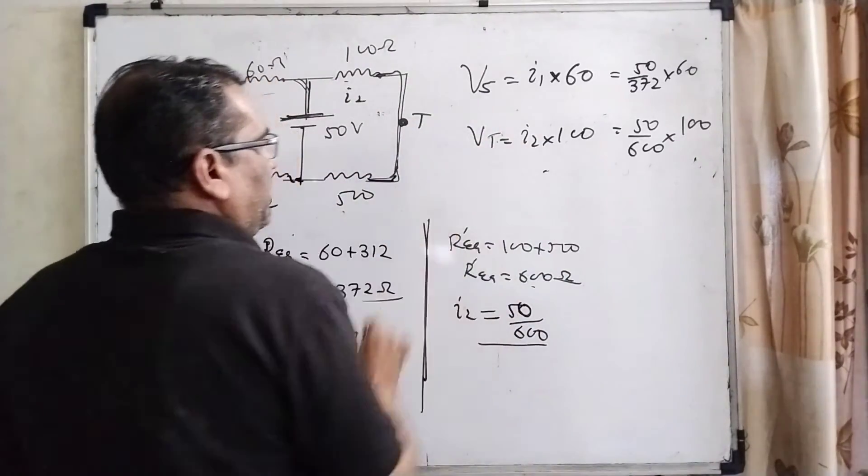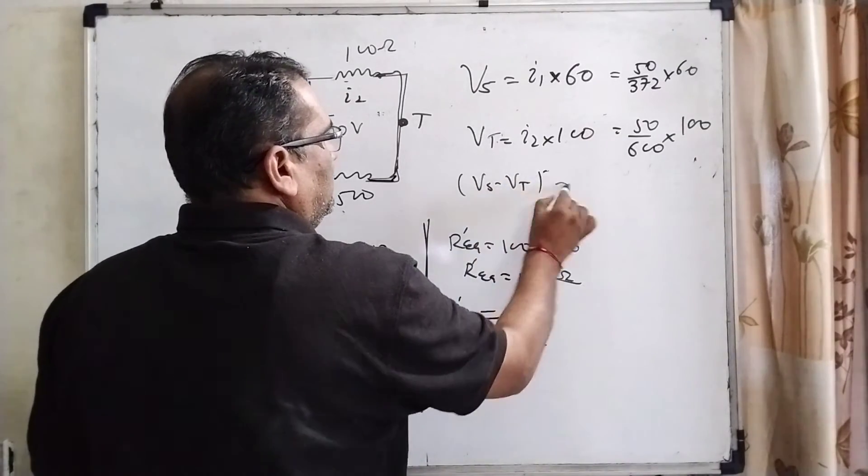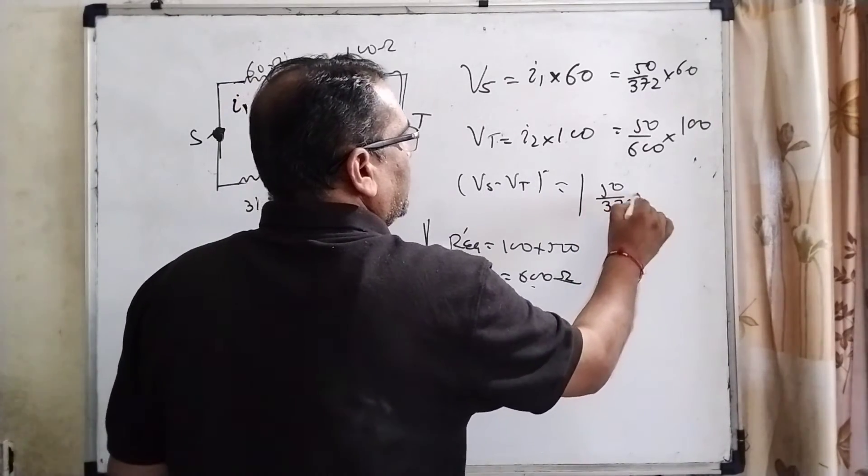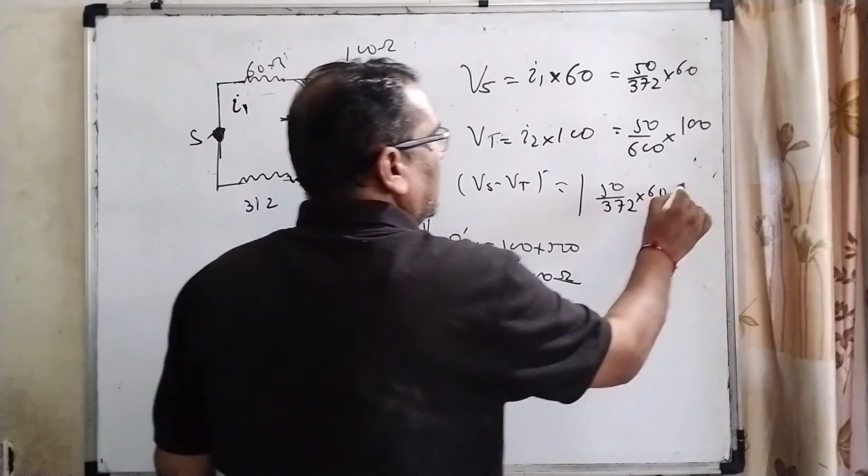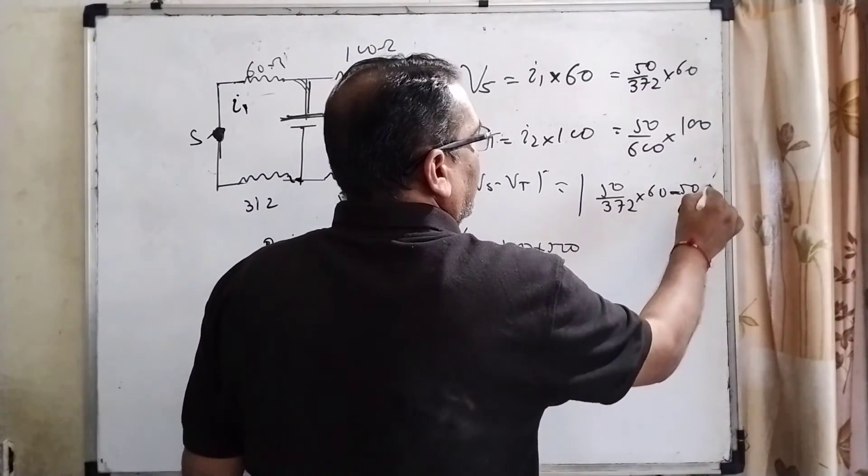This is V at T. Now Vs minus VT equals 50 divided by 372 times 60 minus 50 divided by 600 times 100.